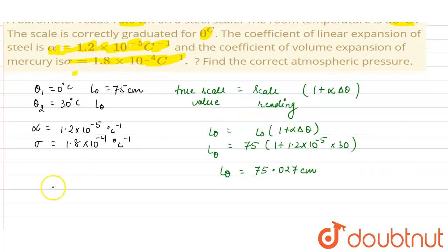Now, let us suppose that let the length of mercury at 0 degree Celsius is L0.